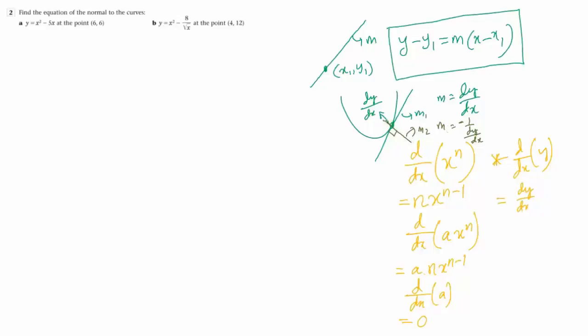If 3 is the gradient, then minus 1 by 3 is the gradient of the normal. If 4 is the gradient of the curve, then gradient of the normal is minus 1 by 4. That's the relationship of negative reciprocal.